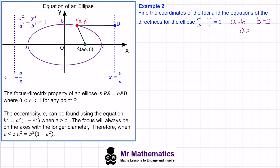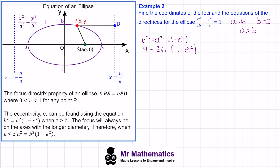Because a is greater than b, we use b squared equals a squared times (1 minus e squared). Substituting in, 9 equals 36 times (1 minus e squared). Dividing both sides by 36 gives one quarter equals 1 minus e squared. Moving terms gives e squared equals three quarters, so e equals root 3 over 2 (plus or minus).